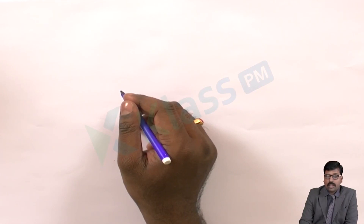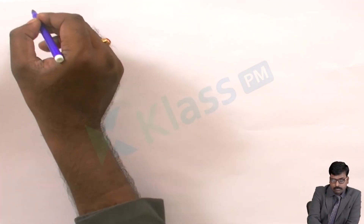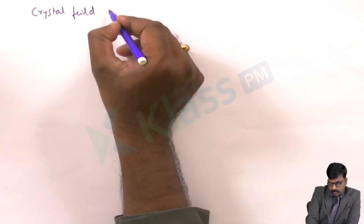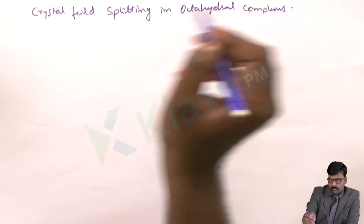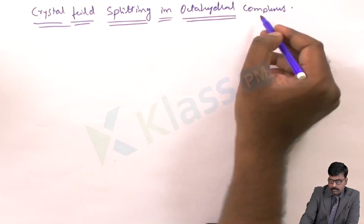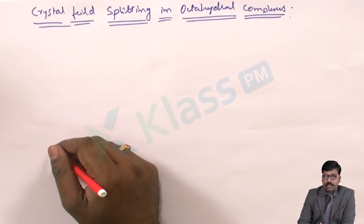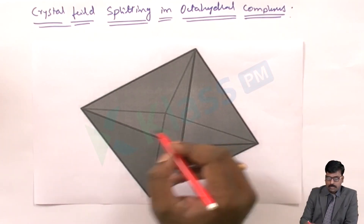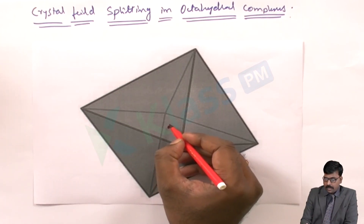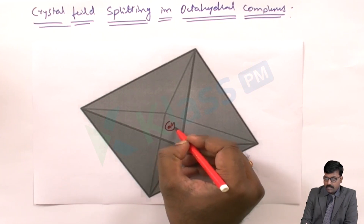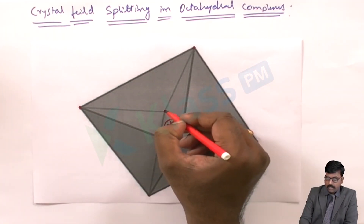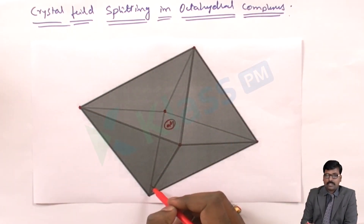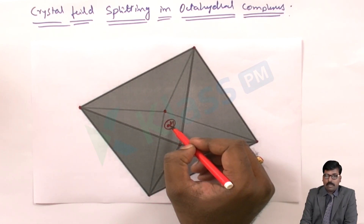We will study the crystal field splitting in octahedral complexes. Before going into the octahedral splitting, let's see how the octahedral structure looks. At the center, the metal atom or metal ion will be there, and the ligands are arranged around it in this way.